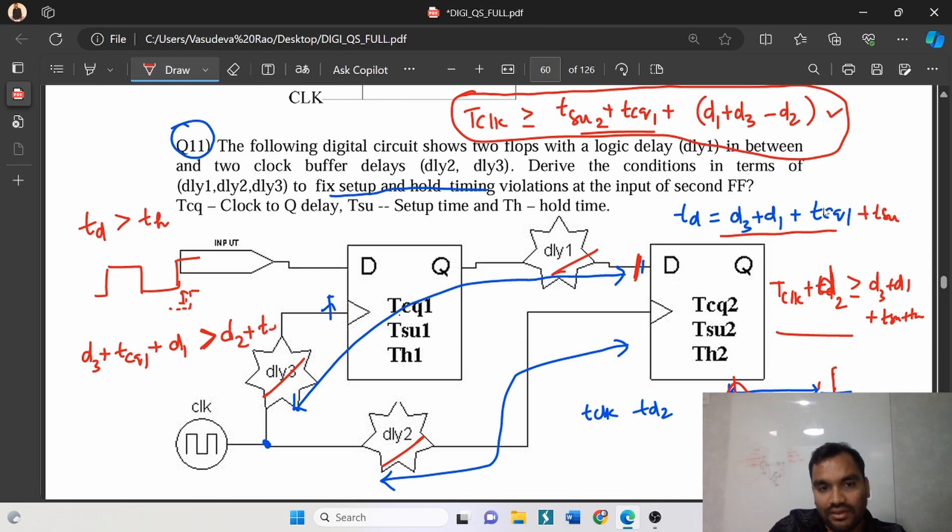d2 plus Thold, the hold time of the second clock. So here Thold should be always less than or equal to - bring d2 to this side, it will become minus. So if you write the equation: d1 plus d3 minus d2.